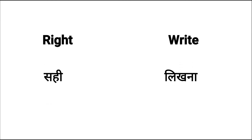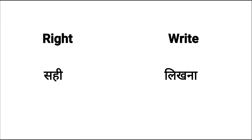So let's take some examples. Sabse pahle hai — 'right' (R-I-G-H-T) and 'write' (W-R-I-T-E). Dono ka pronunciation hai 'right.' But jo aapke left mein hai, yani R-I-G-H-T, uska meaning hota hai daaya ya sahi. Aur R-I-T-E, iska pronunciation is same — 'right' — but meaning hai likhna.